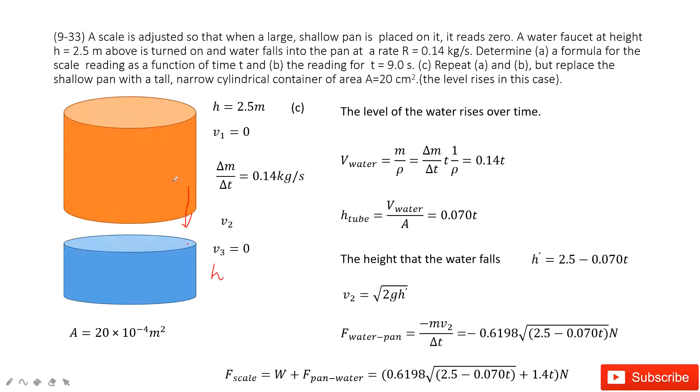So we can say, first one, how much water falls down? Volume for this one is mass divided by density. And we know this mass changes with Δt. So this mass changes with Δt.